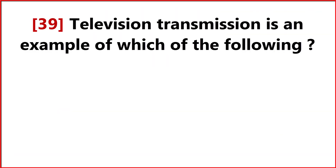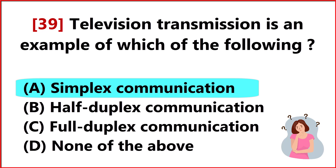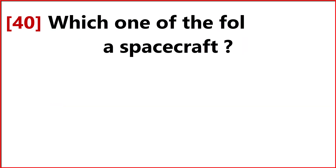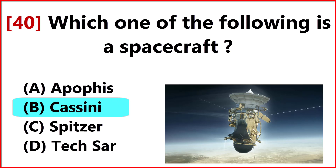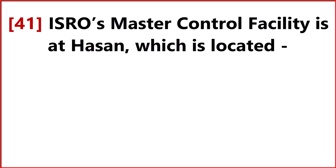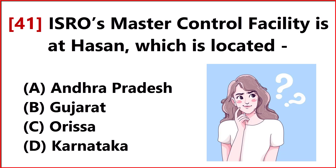Television transmission is an example of which of the following? Answer Option A: Simplex communication. Which one of the following is a spacecraft? Answer Option B: Cassini. ISRO's master control facility is at Hassan, which is located in Answer Option D: Karnataka.